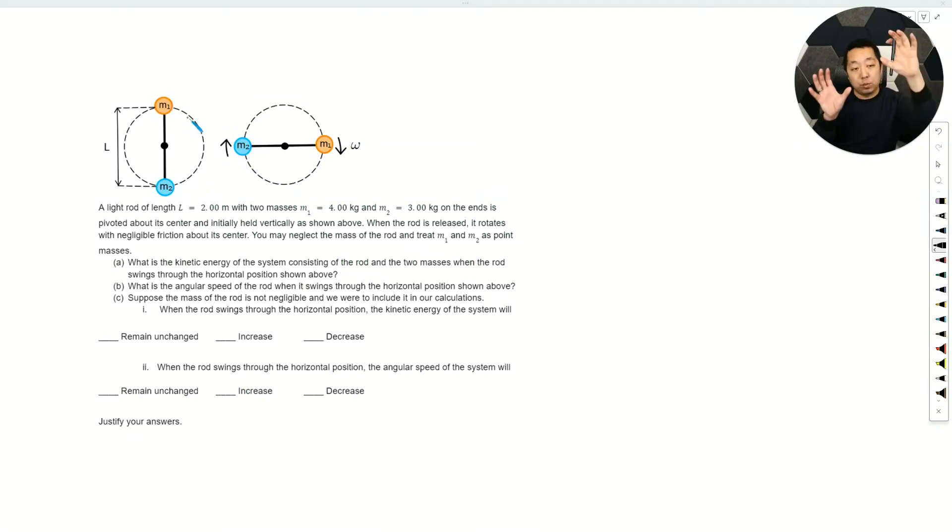Here we have a scenario where we have this rod. It's going to get released and rotate. We want to know the kinetic energy of the system consisting of the rod and the two masses when the rod swings to the horizontal position, neglecting the mass of the rod and just talking about the point masses. So first, what is our system? We're probably going to do conservation of energy, but I want to make sure you understand why. The system is going to be the masses plus the rod—the rod has no mass, so it doesn't really matter if you include it or not—plus the earth.